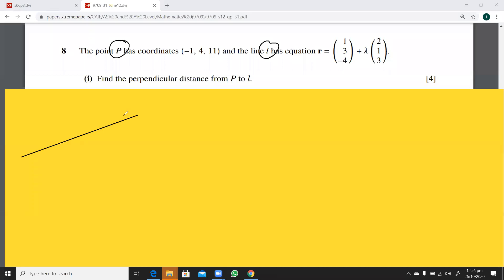And I have its equation, which is given here. I'm not going to write it down here. Here is a point P, which has the coordinates minus 1, 4, and 11. I have to find the distance of this point P from this line L.